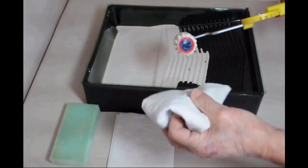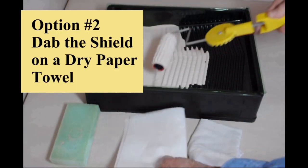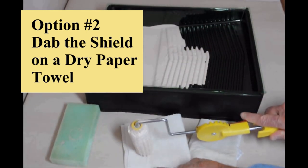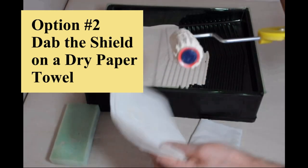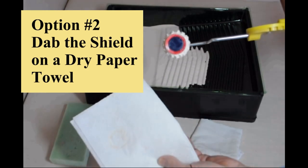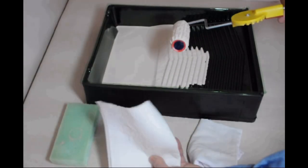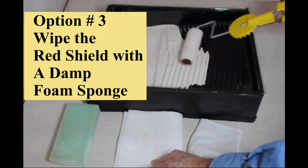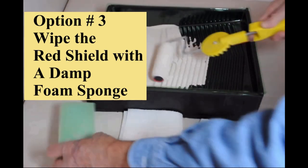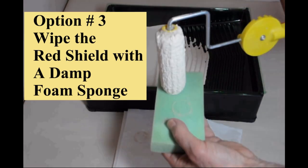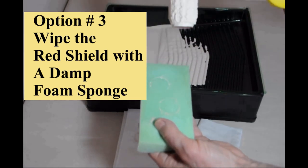Here are three options for wiping the red shield to make sure it's clean. A soft dry cotton cloth, a dry paper towel, and or a damp foam sponge. Any of these will work, but you need to make sure to keep the edge of the shield clean.